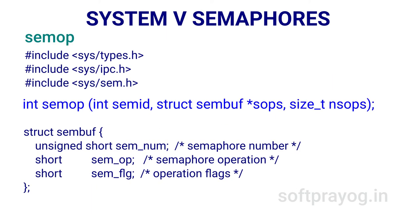The semop call is for System 5 semaphore operations. We can implement P and V operators using semop. The first parameter is semid, which identifies the semaphore set. The second parameter sops is an array of struct sembuf. Each element is a semaphore operation to be done on one or more semaphores in the set. The number of elements is given by the last parameter nsops. All operations are done atomically — either all work is done or nothing is done. The first member of sembuf is semnum, the semaphore number in the set, numbered 0 onwards. Next is the short integer semop: negative means decrement, semop of -1 means the P operation.